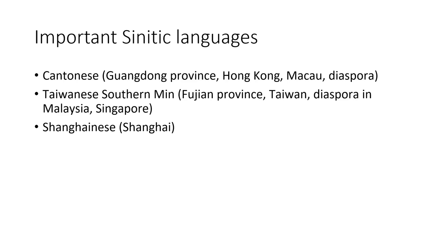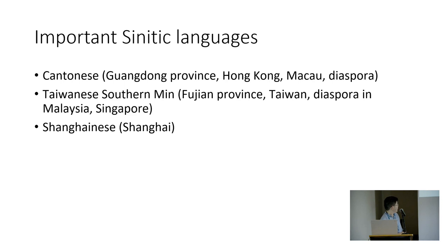Important Sinitic languages apart from Mandarin: Cantonese is probably the second most important — spoken in Guangdong province, Hong Kong, Macau, and the diaspora especially in the UK and US. Taiwanese/Southern Min/Hokkien is spoken in Fujian province, Taiwan, and diaspora especially in Malaysia and Singapore. Shanghainese is spoken in Shanghai, though with many people from other provinces living there now, it's used less.